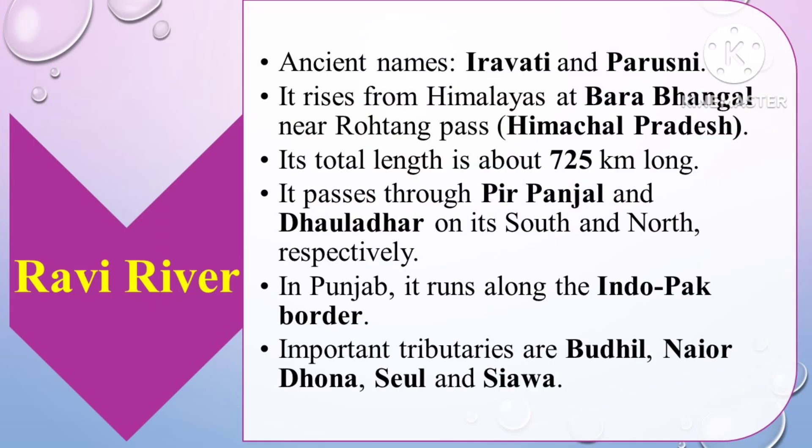The Ravi River's ancient names are Iravati and Parusni. It rises from the Himalayas at Barabhangal, near Rohtang Pass, in Himachal Pradesh. Its total length is about 725 kilometers. It passes through the Pir Panjal and Dhauladhar ranges. Its important tributaries are Budhil, Nyadhona, Sul, and Siawa.